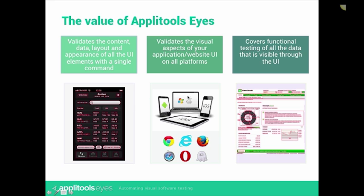The second benefit of ApliTools Eyes is that it allows you to perform this validation on all the different browsers, devices, operating systems, and screen resolutions, without requiring additional maintenance work for each of the platforms. Another important benefit is functional testing of all the application elements visible through the user interface. In many cases, a major part of the functionality is exposed through the UI, and by visually validating the UI, you get significant coverage of all the functionality in a fraction of the effort required with existing automation solutions.